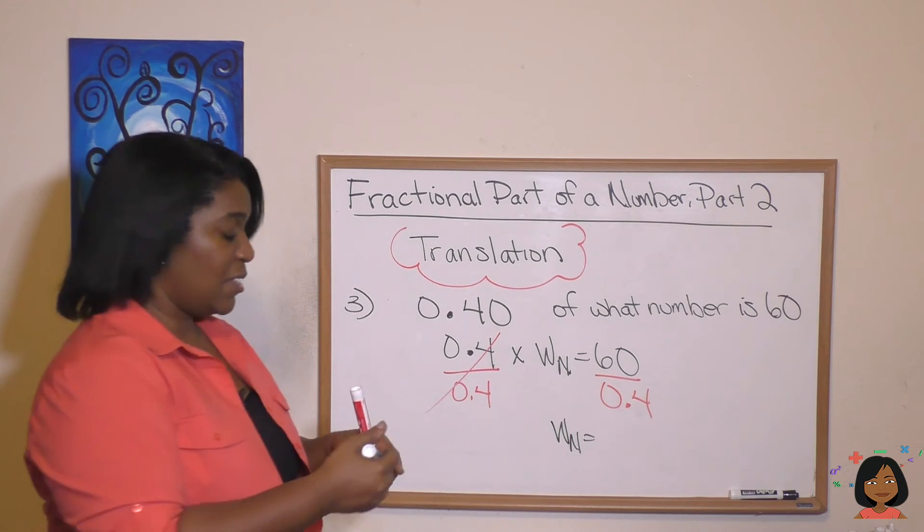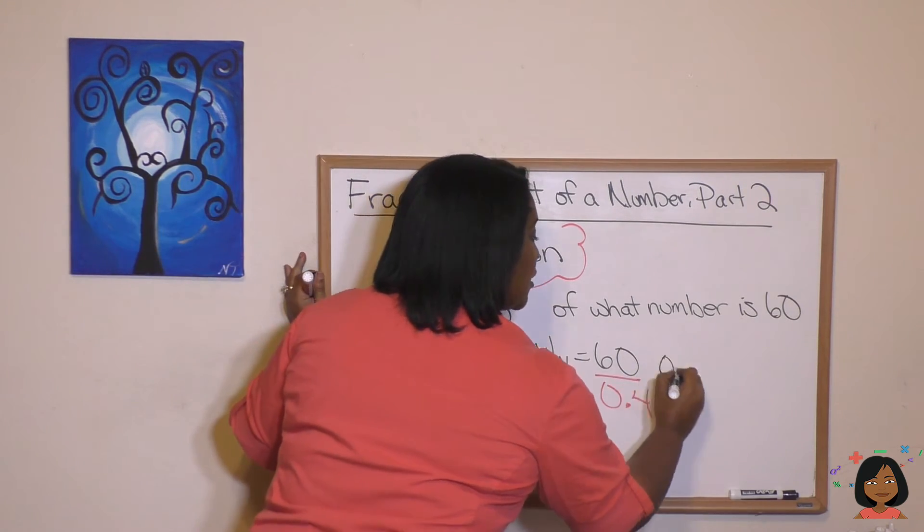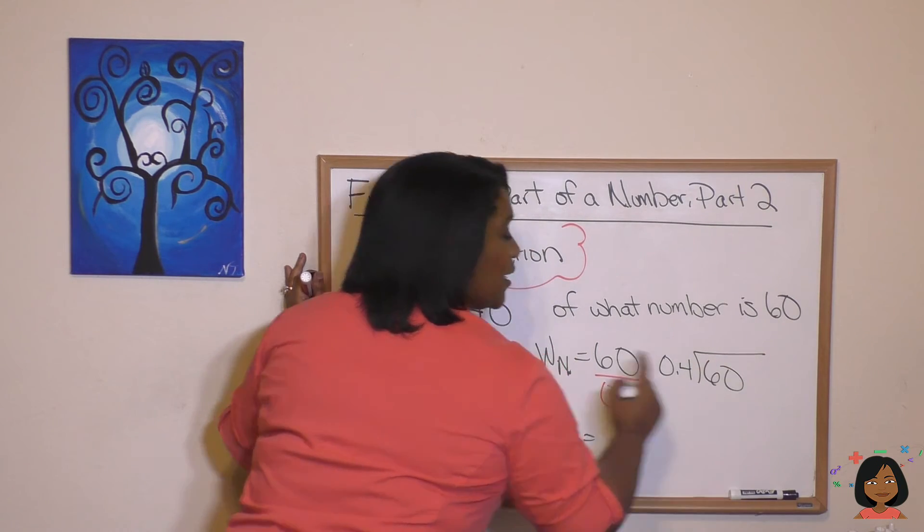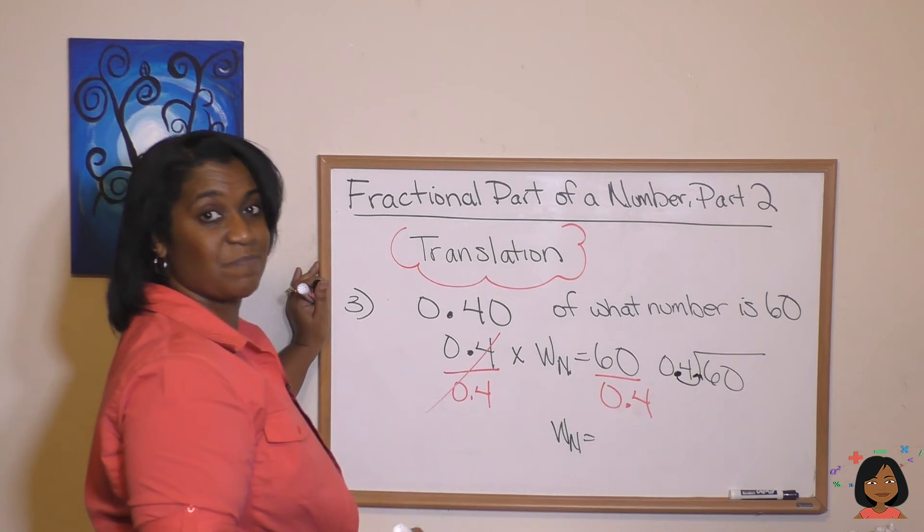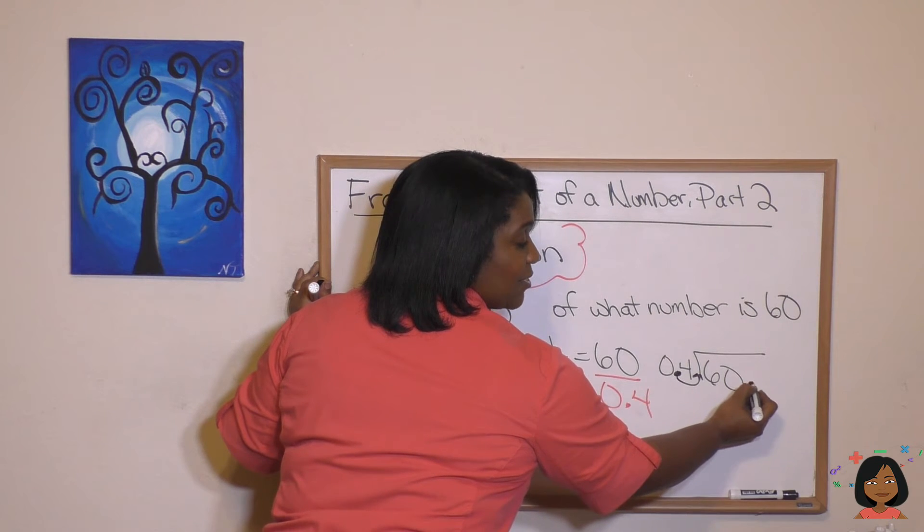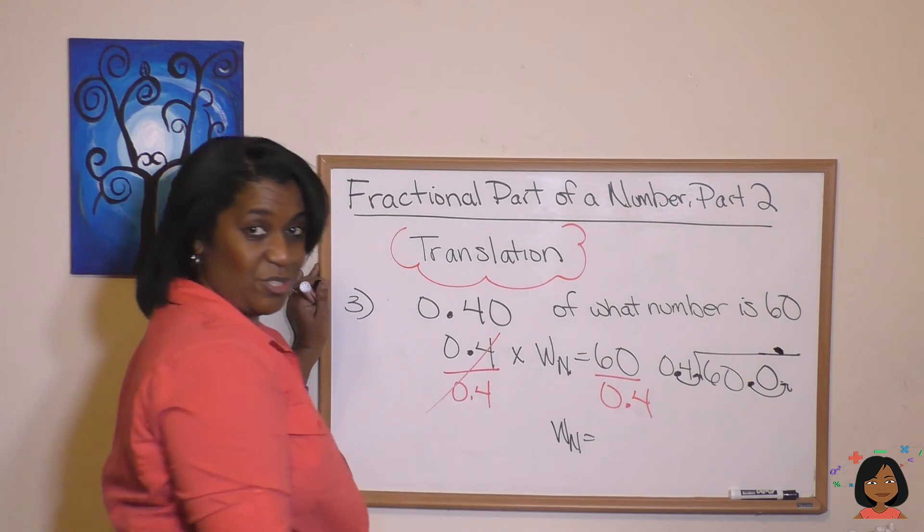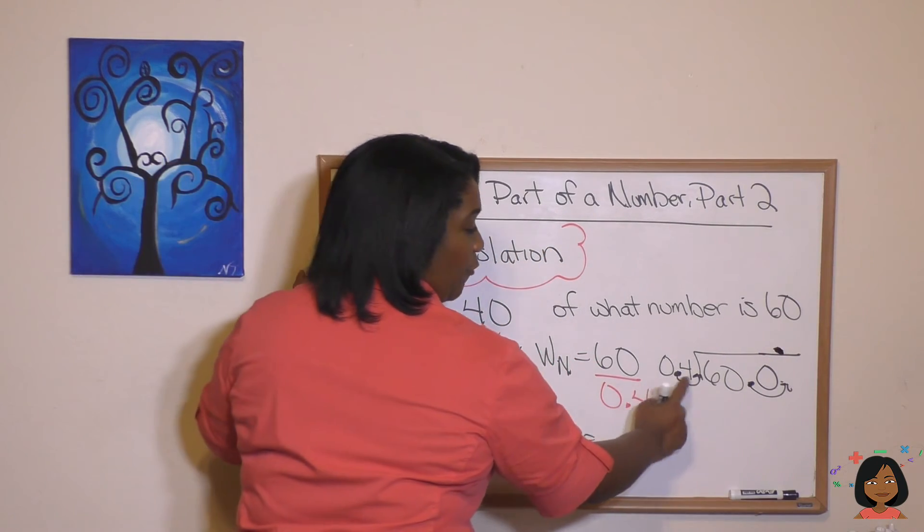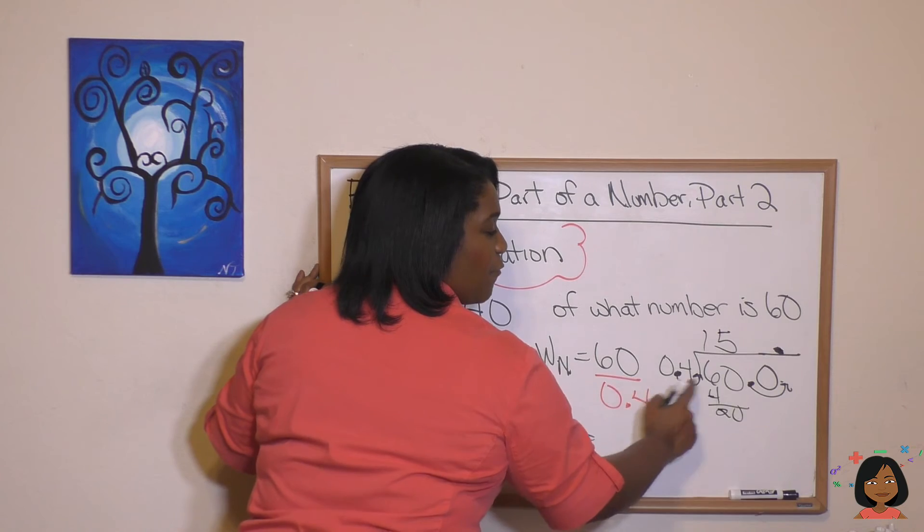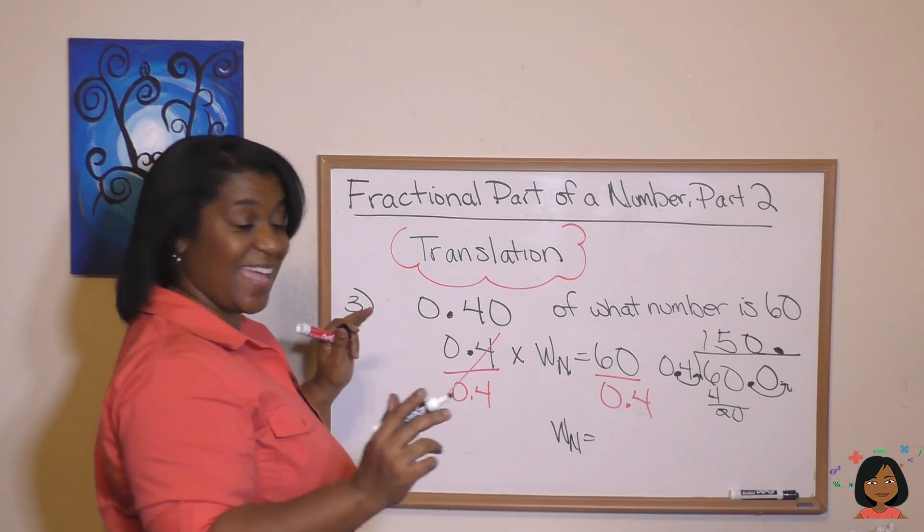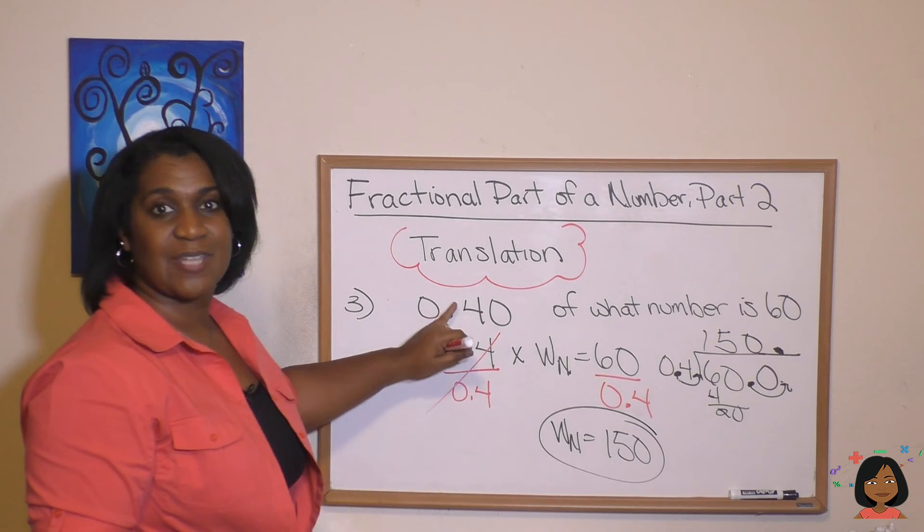And that looks like this: 0.4 into 60. Now you know we have to move this decimal. We have to clear our decimal by moving it over one space. We've got to do the same thing here. Our decimal is here, so we're going to move it over one space and then put it into our quotient. Now we can do our division. 4 goes into 6 one time. 4 goes into 20 five times. 4 goes into 0 zero times. So we got the same answer we got before, which was 150. But this time we used a decimal instead of a fraction.